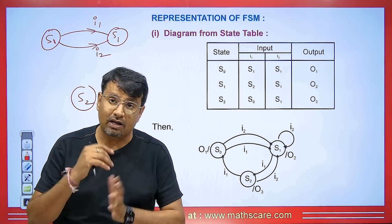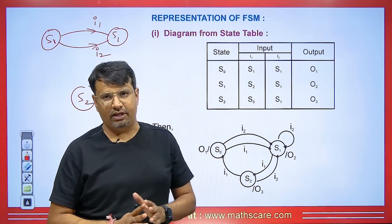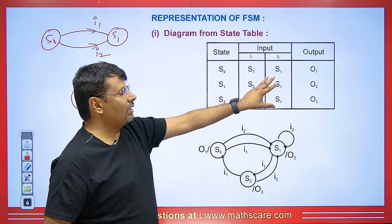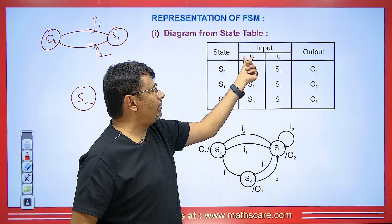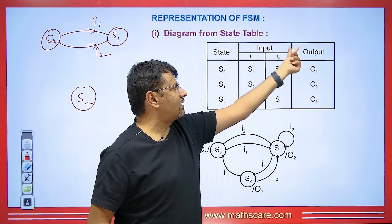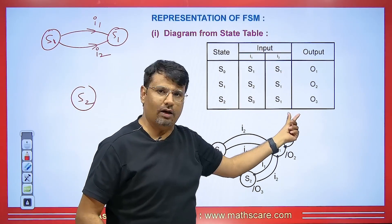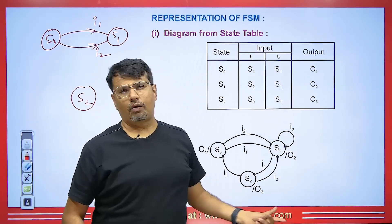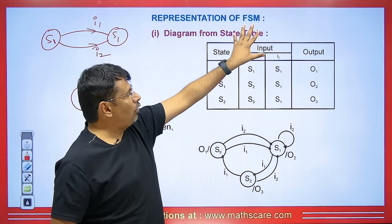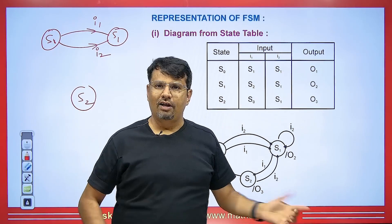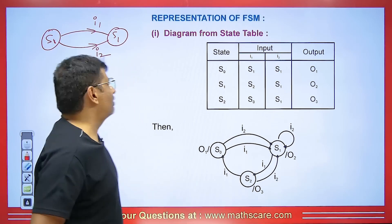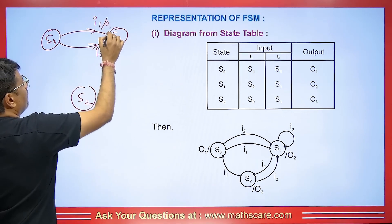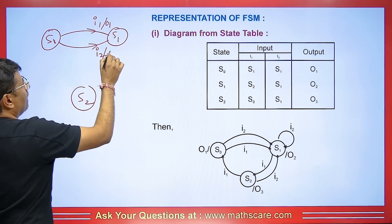Sometimes you might come across two types of tables in your exams. Either you will be given this type of table, or an output will be given corresponding to its input, with another output given corresponding to the other input. Here, both corresponding inputs have the same output O1.